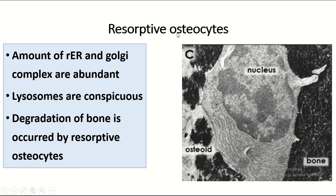The resorptive osteocyte: the amount of rough endoplasmic reticulum and Golgi complex is abundant, lysosomes are conspicuous, and degradation of bone is carried out by the resorptive osteocyte.